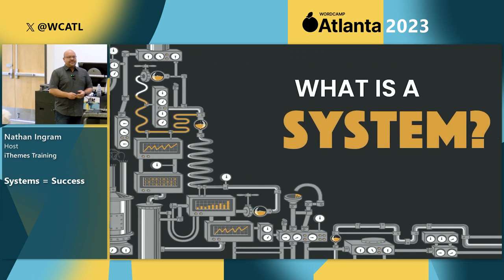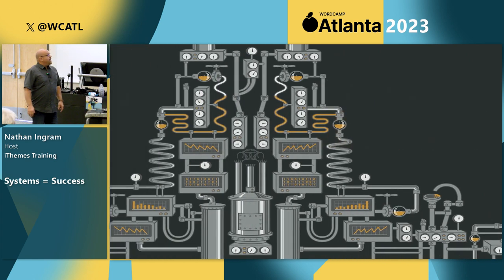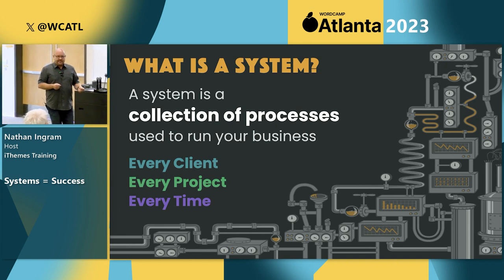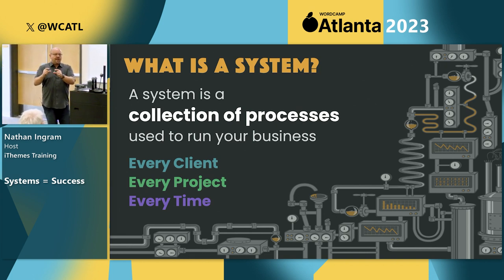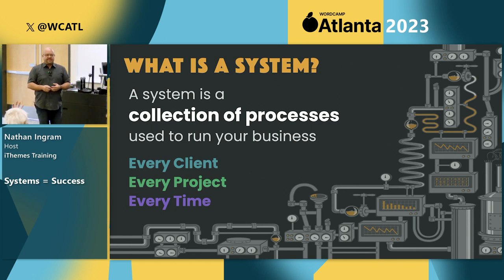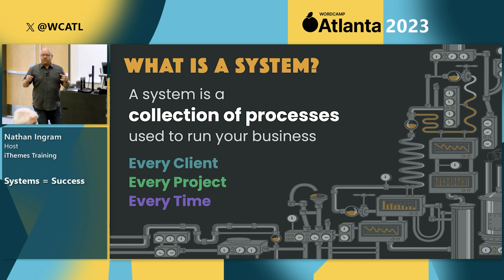What is a system? Putting some language around this is helpful so we know what we're talking about. My definition is a system is a collection of processes — that's it at the root. A system is a collection of processes that you use to run your business. You use them every project, every client, every time. Consistency matters when it comes to systems.